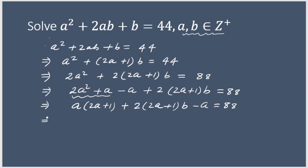You can clearly see that (2a + 1) can be taken common. Taking (2a + 1) common, I will get a + 2b from here and then the remaining minus a, so: (2a + 1)(a + 2b) − a = 88.